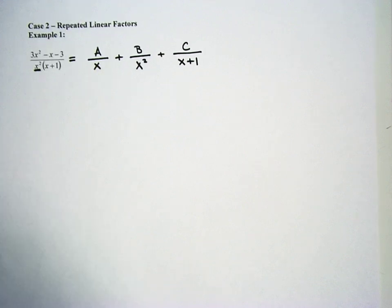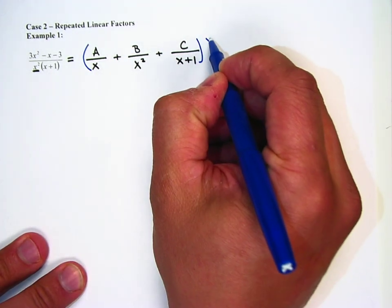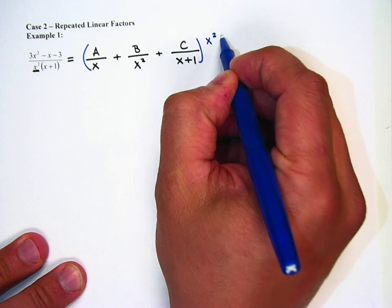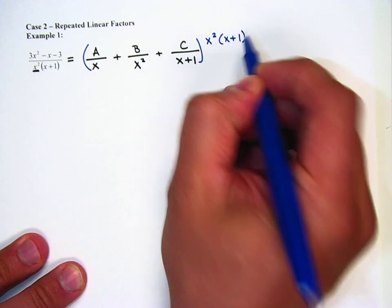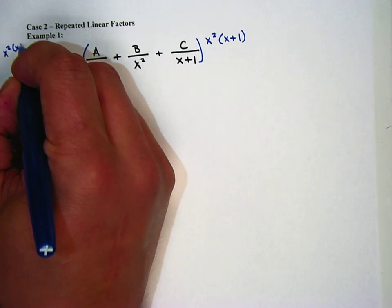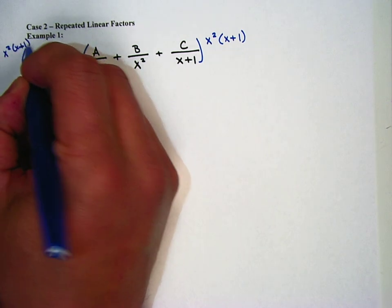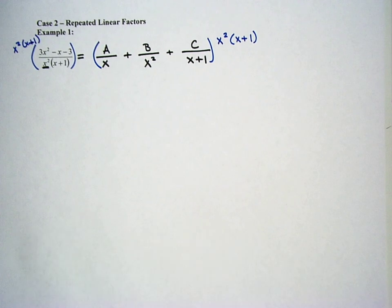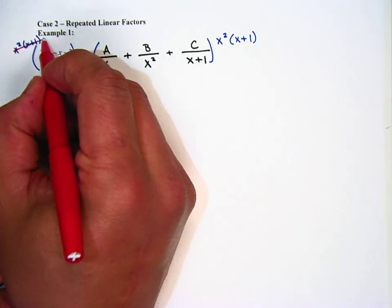We're going to multiply both sides by our common denominator, which is x squared times x plus 1. Multiply this side by x squared times x plus 1. On the left side, everything cancels out, which is always nice.